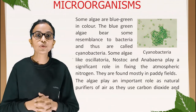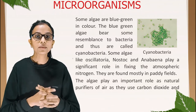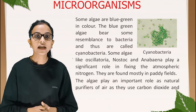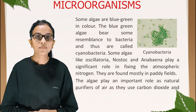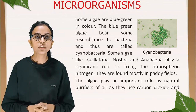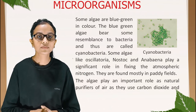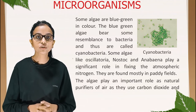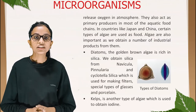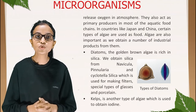Some algae are blue-green in color. Blue-green algae bear resemblance to bacteria and are thus called cyanobacteria. Some algae like Oscillatoria, Nostoc, and Anabaena play a significant role in fixing atmospheric nitrogen and are found mostly in paddy fields. Algae play an important role as natural purifiers of air — they use carbon dioxide and release oxygen into the atmosphere, and act as primary producers in most aquatic food chains.